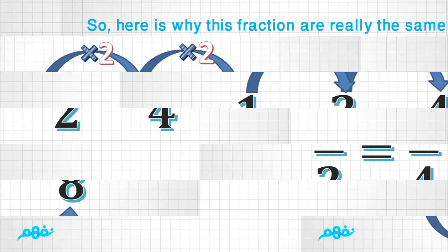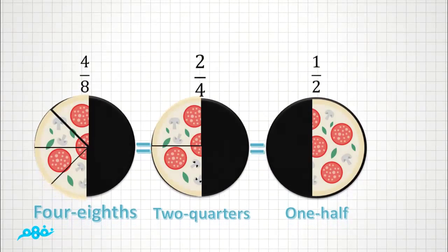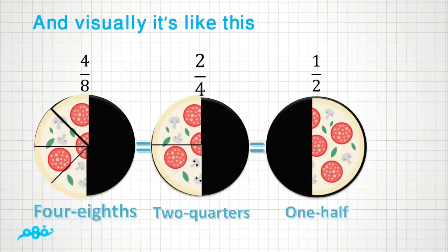And visually it's like this: four-eighths equals two-quarters equals one-half.